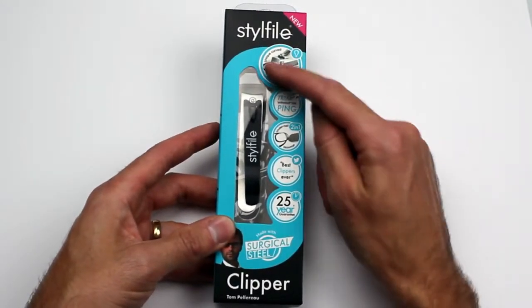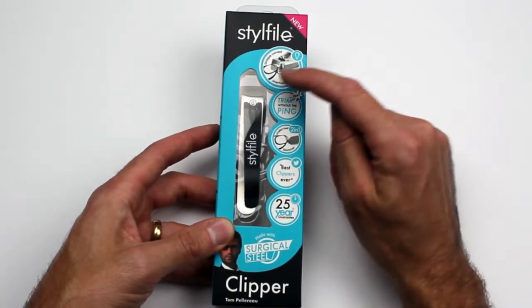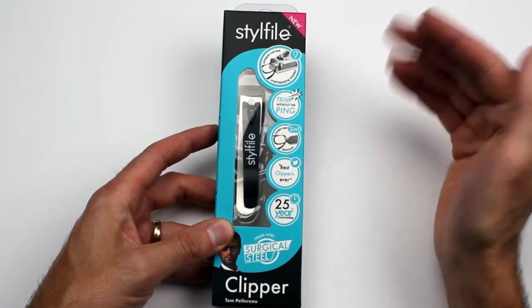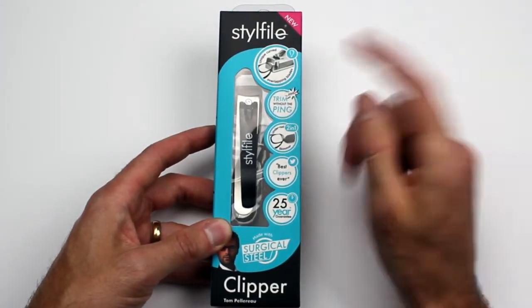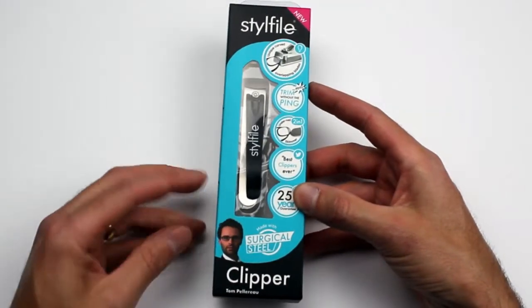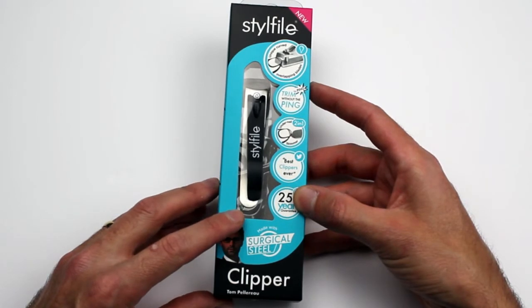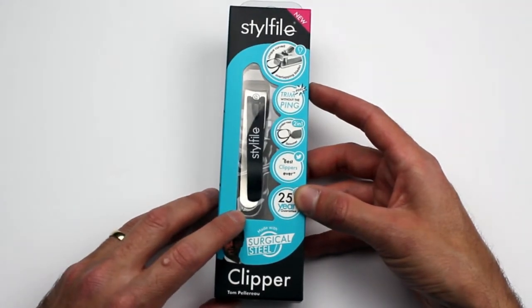It's still got the same curved overlapping blades which smoothly cut through the nail so you can trim without the ping. It's also got a clever under nail skimmer built in there and we'll go into some details.